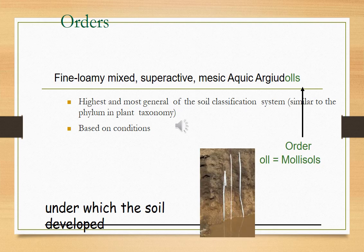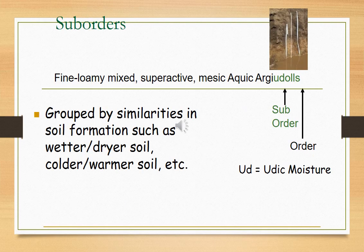Soil order is a category based on soil-forming processes, as indicated by the presence or absence of major diagnostic horizons, as you can see in this slide. Suborders suggest genetic homogeneity. Suborders within a soil order are differentiated on the basis of additional soil properties and horizons.